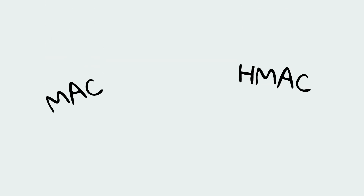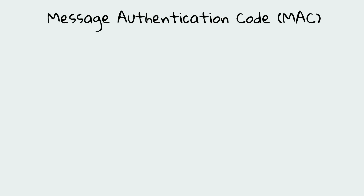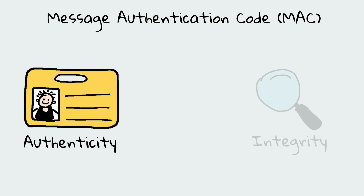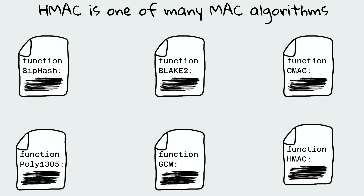Let's explain some details about MACs and HMAC. The message authentication code provides authenticity in addition to integrity, because it uses a secret key — and that's how it mainly differs from a regular hash. There exist many algorithms for calculating a message authentication code, and HMAC is just one of them. Message authentication codes are also used in authenticated encryption, which will be covered in a separate video.